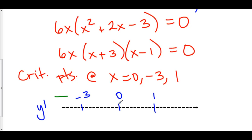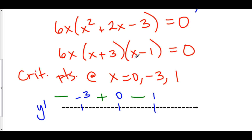How about between negative 3 and 0? For example, negative 1: negative, positive, negative — negative times a positive times a negative gives us a positive. Now let's check in between 0 and 1, like for example one-half: positive, positive, negative — so the derivative is negative between 0 and 1. Let's check to the right of 1: positive, positive, positive.